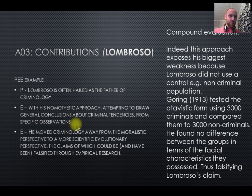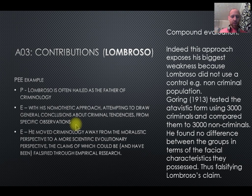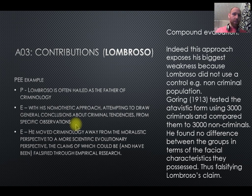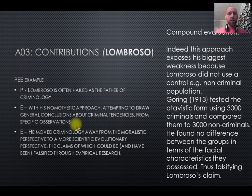As a result, his biggest strength — his ability to have predictions falsified — is also his biggest weakness, because Gorin comes along and does exactly that. He tests atavistic form on 3,000 criminals and 3,000 non-criminals and finds no differences between the two. So it's a good use of compound evaluation there.